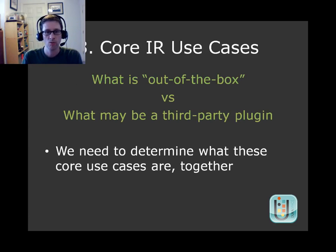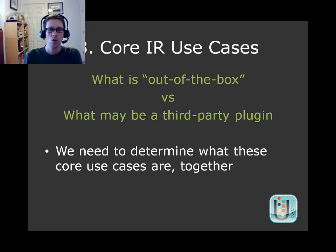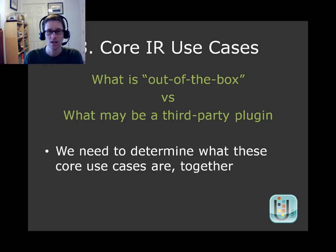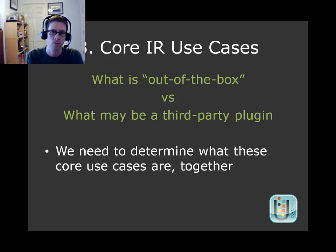The third point is really around those core IR use cases — what are they? We had a lot of brainstorming at this initial meeting among 10 institutions, but it's a much bigger world than that. The DSpace community is worldwide and really needs to involve all of us in deciding what these use cases are. It's going to be a constant balance between what needs to be out of the box in DSpace and what could be implemented as a third-party plugin. Even amongst those 10 institutions there was already a lot of disagreement, but it's a discussion we need to have.